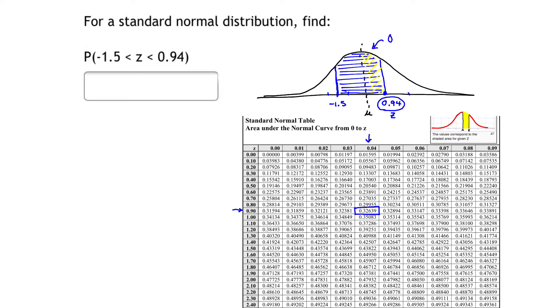0.32639. In other words, 32.639% of the area under the curve is shaded in that yellow band.